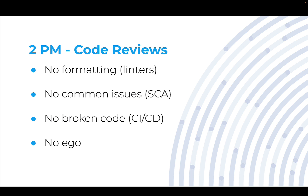The first one is no formatting. That's because we want humans to focus on the stuff humans are good at — logic, purpose, reasoning — and we can use computers to focus on what they're good at. Every language imaginable has a tool, usually known as a linter, that's capable of formatting the code automatically for you. There's no need to spend 15 minutes arguing about tabs versus spaces. We have a linter, it's automatically hooked up, it's going to format the code for us.